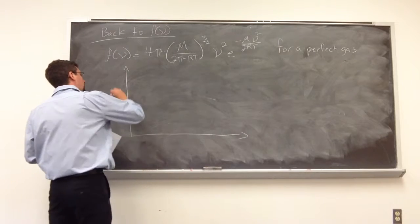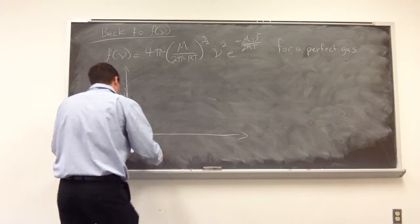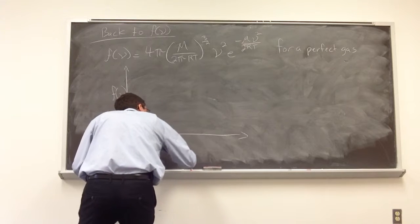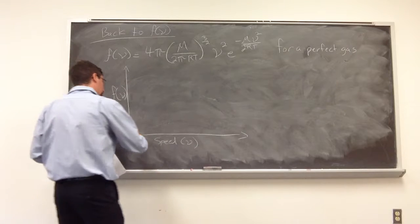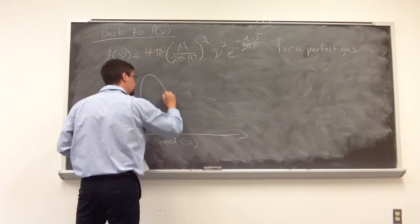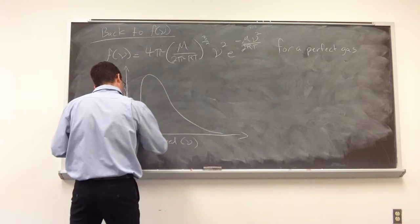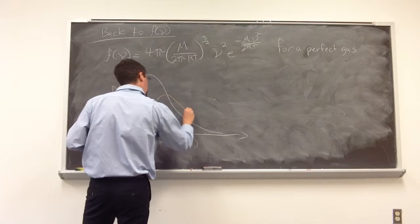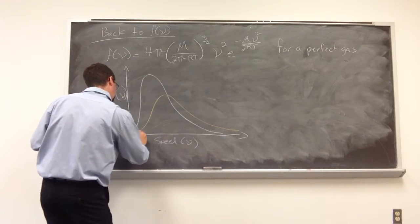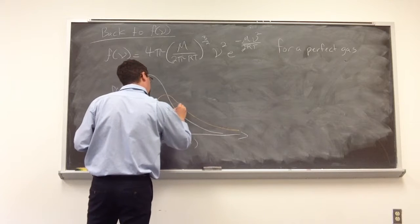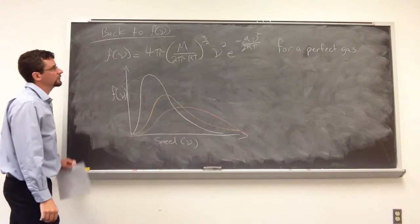So our y-axis is that distribution function, our x-axis is the speed nu. And we're going to have three distributions. One. Two. And three.